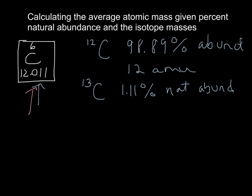Now we have the isotopic mass for carbon-12 and its natural abundance. We do actually still need the isotopic mass for carbon-13, which is 13.00335.